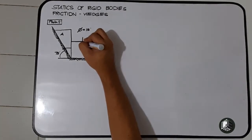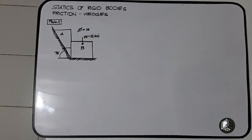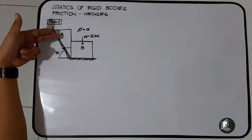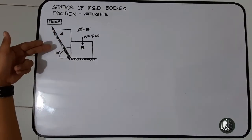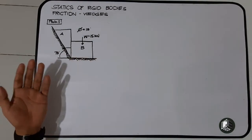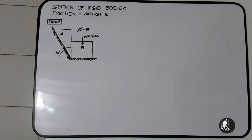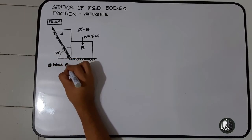So meron tayo yung weight sa ating block B na equals sa 15 kilo Newton. Ngayon, i-determine natin yung weight ng ating block A. Kapag nagpunta tayo sa block A, tatlo yung unknown: yung ating weight, yung ating reaction between the surface and block A, and the reaction between block A and block B. Muna tayo dapat sa block B kasi dalawa yung unknown — yung reaction between block B and block A.